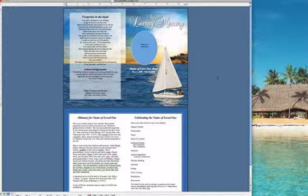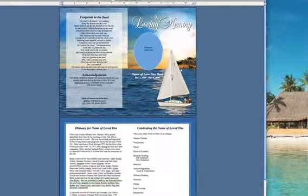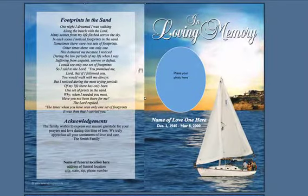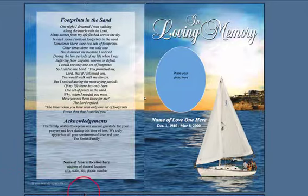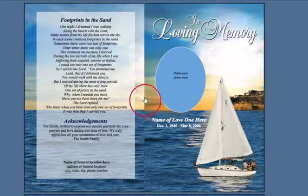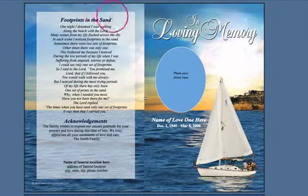Let's lighten the background image of this template by selecting it first and then creating the transparency. You know that the background image is selected because the white little selection boxes will appear around the perimeter. It may be hard to see all of the white boxes around the perimeter since this image bleeds off to the edge of the paper, but as long as you see one or two boxes around the perimeter, you know that it's selected.